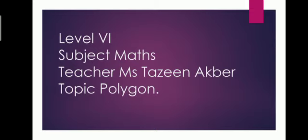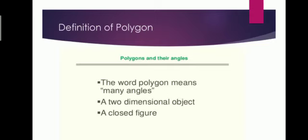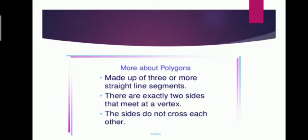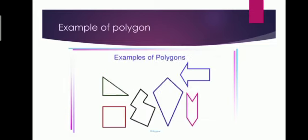In 11C we are going to discuss polygons. First of all, what is a polygon? The definition of polygon: polygons means many angles — a two-dimensional closed figure. A polygon is a closed plane figure with three or more line segments as its sides, where exactly two sides meet at a vertex and the sides do not cross each other. These are the examples of polygons.